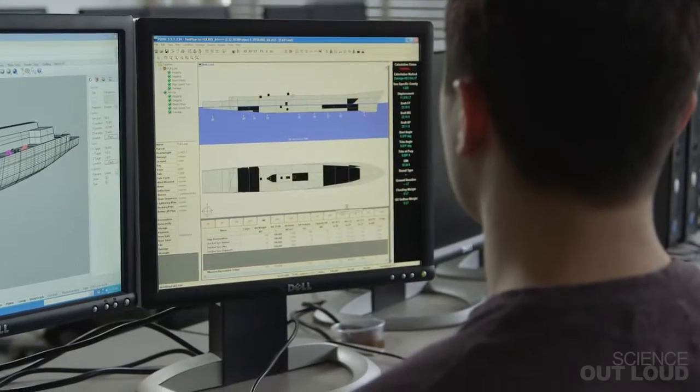What naval architects do now is try to predict what kind of damage is most likely to happen when designing a ship.